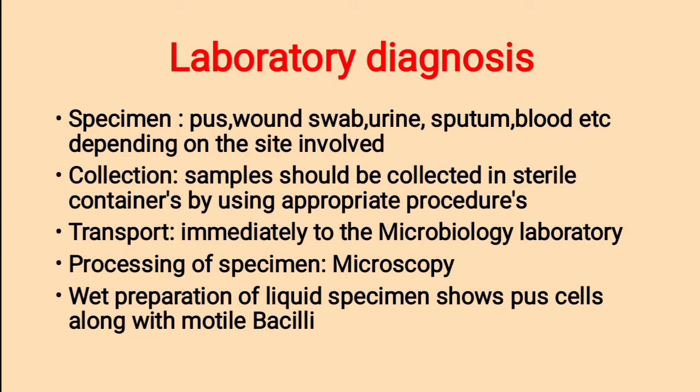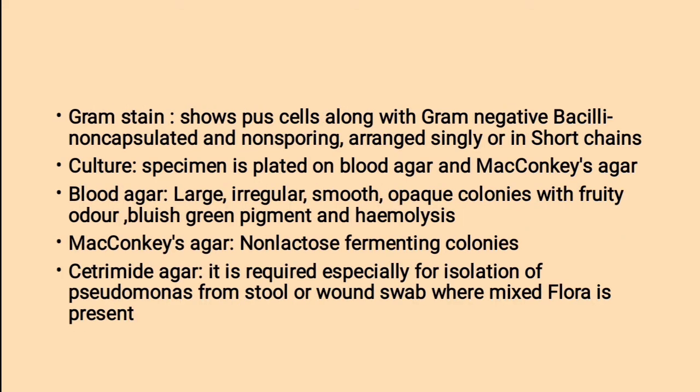Laboratory diagnosis. Specimens to be collected: pus, wound swab, urine, sputum, blood, etc., depending on the site involved. Collection: sample should be collected in sterile containers using appropriate procedures. Transport: sample should be immediately transported to the microbiology laboratory. Processing by microscopy: wet preparation of liquid specimen shows pus cells along with motile bacilli. Gram staining shows pus cells along with gram-negative bacilli — non-capsulated, non-sporing organisms arranged singly or in short chains.